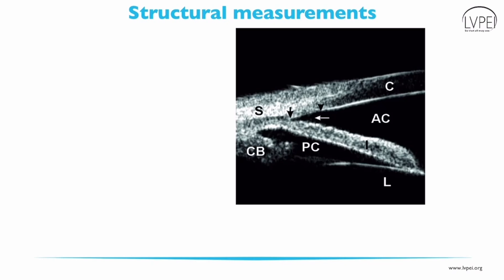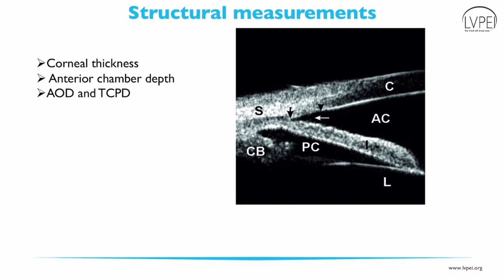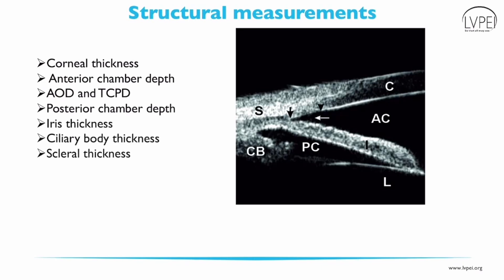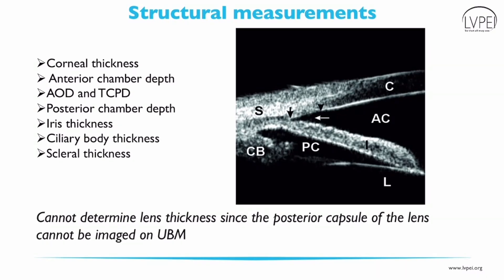UBM can be used to measure the size of various structures. It helps in measuring the thickness of the cornea and also finding the etiology for corneal edema. Anterior chamber depth can be measured from the posterior surface of the cornea to the lens capsule. Normal anterior chamber depth is 2.5–3 mm. It provides quantitative measurement parameters for the angle of the anterior chamber such as angle opening distance and trabecular ciliary process distance. It can also measure depth of posterior chamber and thickness of iris, ciliary body and sclera. However, it cannot determine thickness of the lens as the posterior capsule of the lens cannot be imaged on UBM.